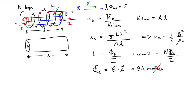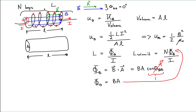Earlier we showed that the angle between the surface area vector and the magnetic field is equal to zero degrees, and the cosine of zero degrees is equal to one. So the magnetic flux through one loop of our inductor is equal to the product of the magnitude of the magnetic field and the area of that loop. We can take this expression for magnetic flux and plug it into our expression for the inductance of the solenoid, giving us inductance equals N times B times A divided by the current I.